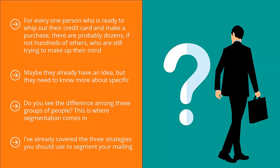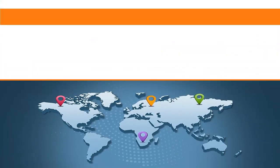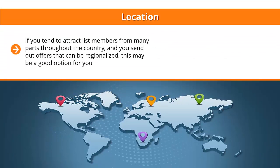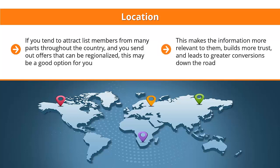The following segmentation strategies are more detailed. Implement them after you've done the three main strategies listed above. You can segment your list members' emails using the following criteria. Location: if you tend to attract list members from many parts of the country and you send out offers that can be regionalized, this may be a good option for you. Send only updates related to a specific region to people who live there. This makes the information more relevant to them, builds more trust, and leads to greater conversions down the road.